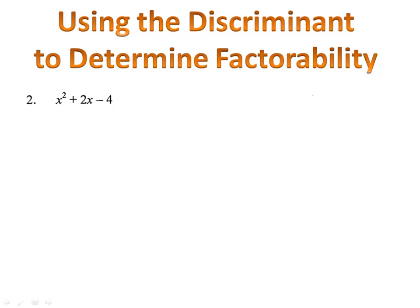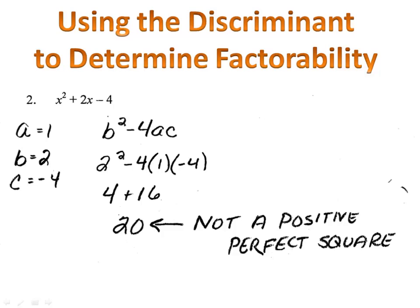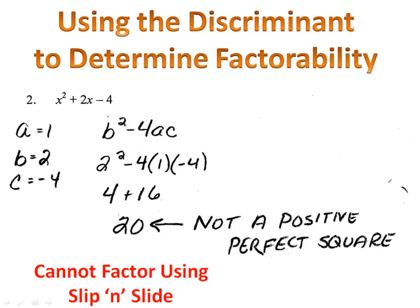In example 2, we have x squared plus 2x minus 4. I could try to factor this using slip and slide — the numbers aren't very big — but suppose I wanted to test just to be sure. We identify a, b, and c, and plug into the formula b squared minus 4ac to see if it's a positive perfect square. Please try this example now, pause the video, and come back when you're done. a is 1, b is 2, c is negative 4. Plugging into b squared minus 4ac, the number came out to be 20. Because 20 is not a positive perfect square, you cannot factor using slip and slide.